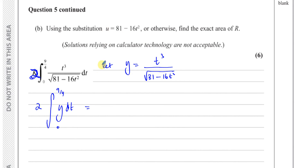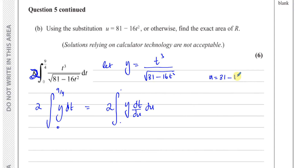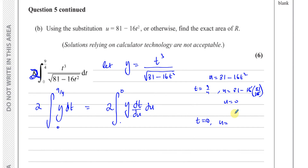When using substitution we need to change the limits to u-values. When t = 9/4, u = 81 − 16 × (9/4)² = 81 − 81 = 0. When t = 0, u = 81 − 0 = 81. So the new limits are u = 0 at the bottom and u = 81 at the top.